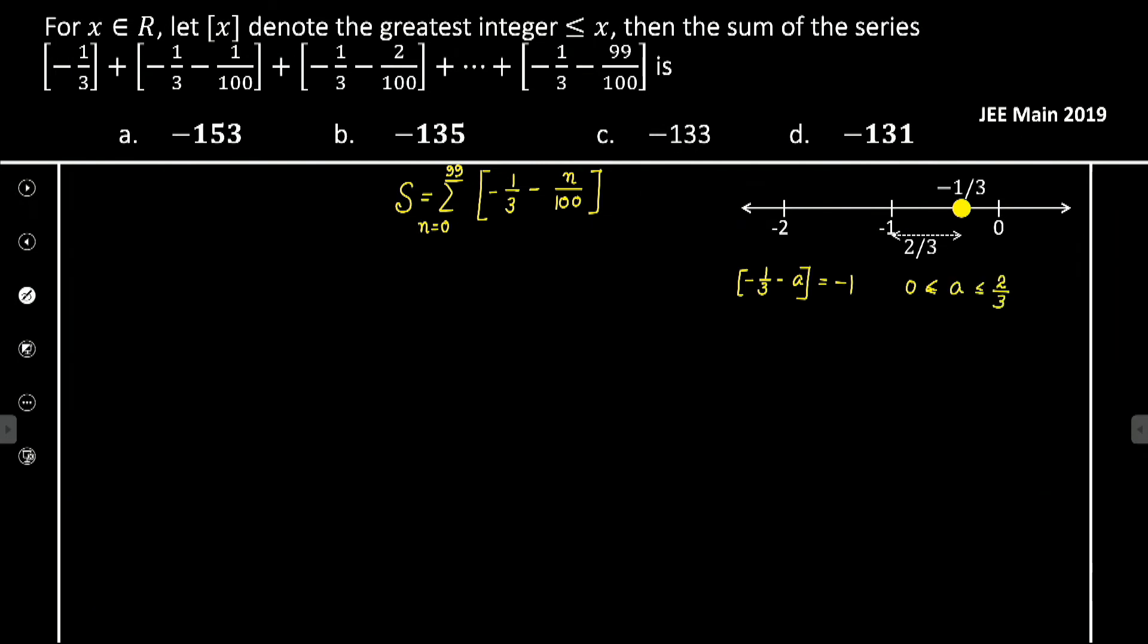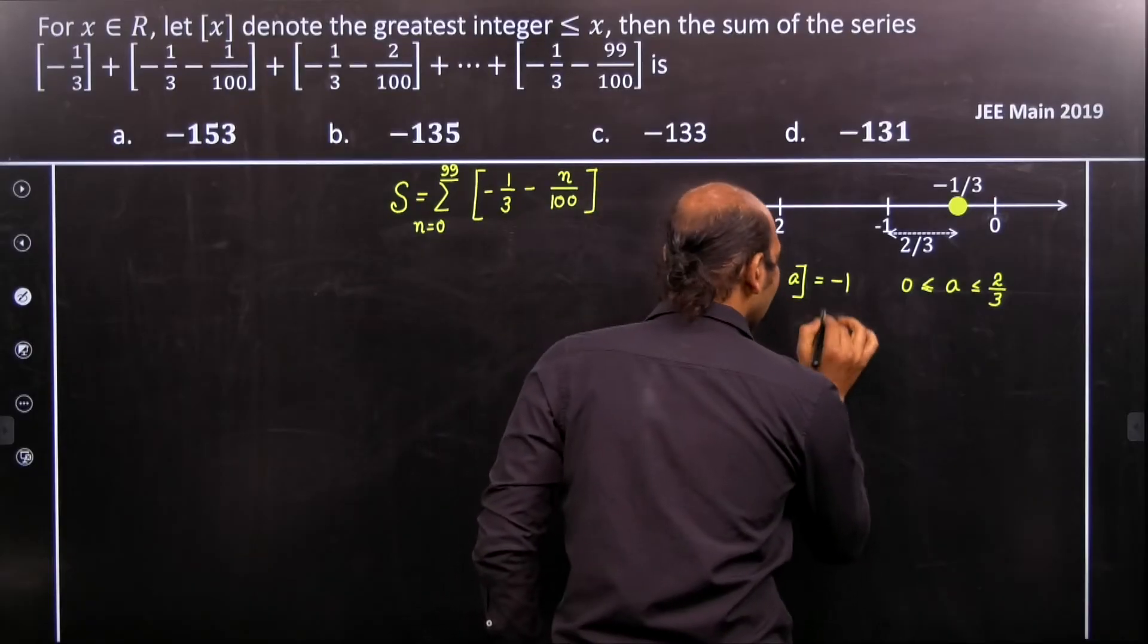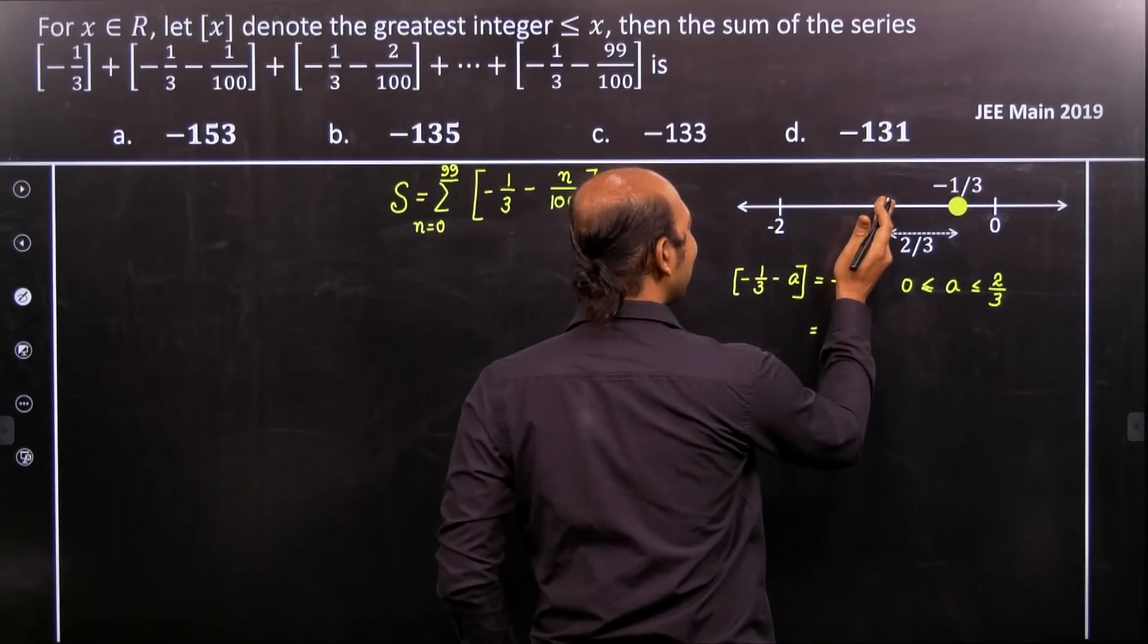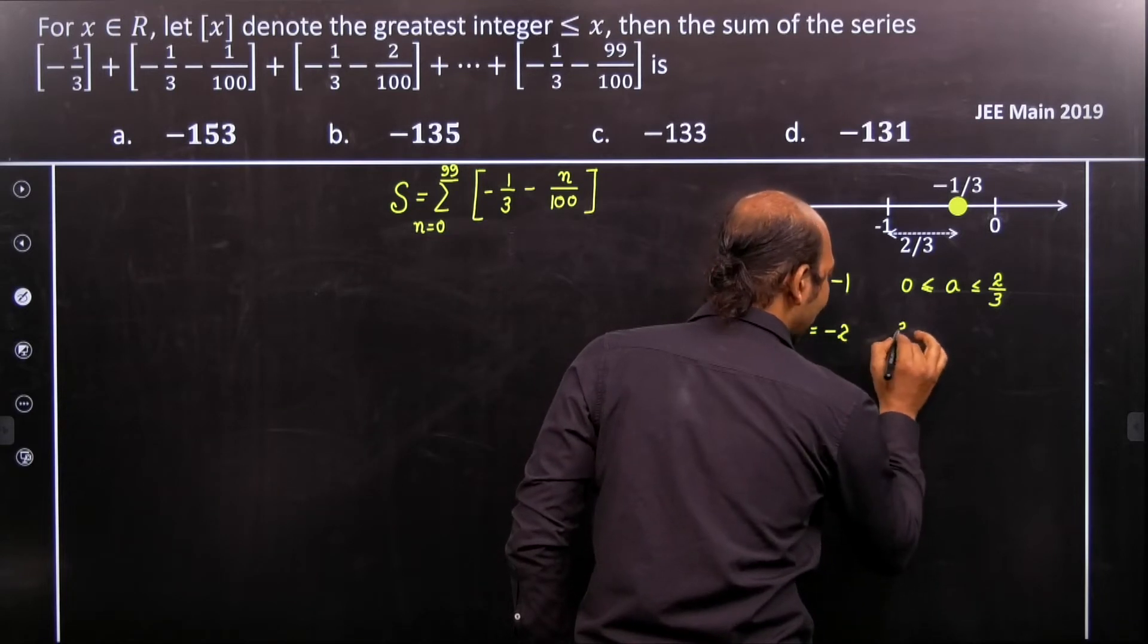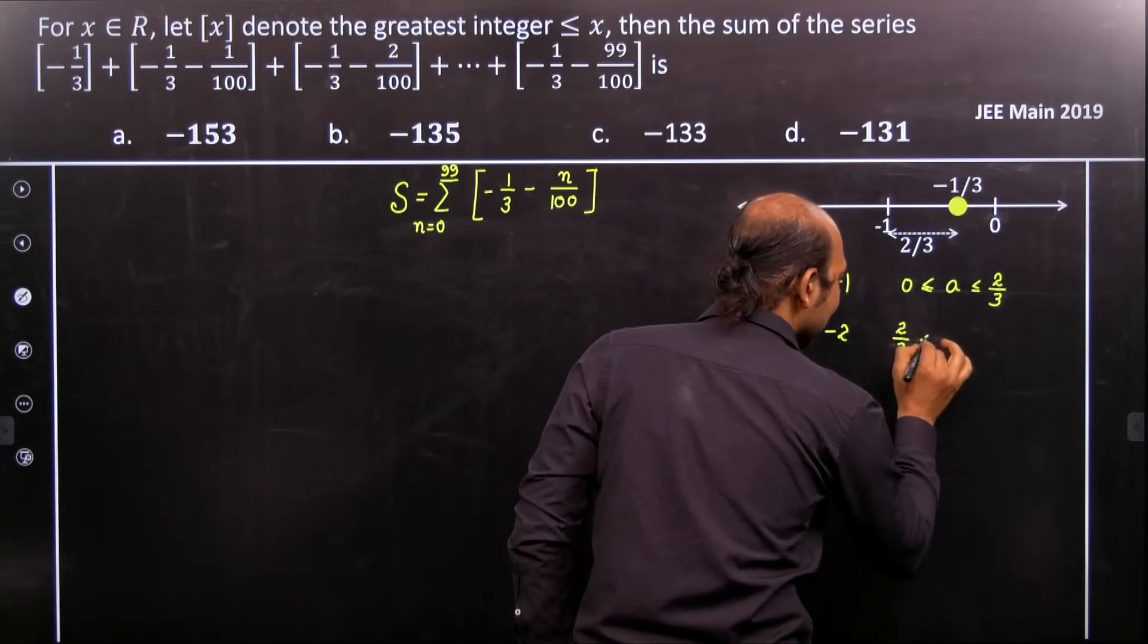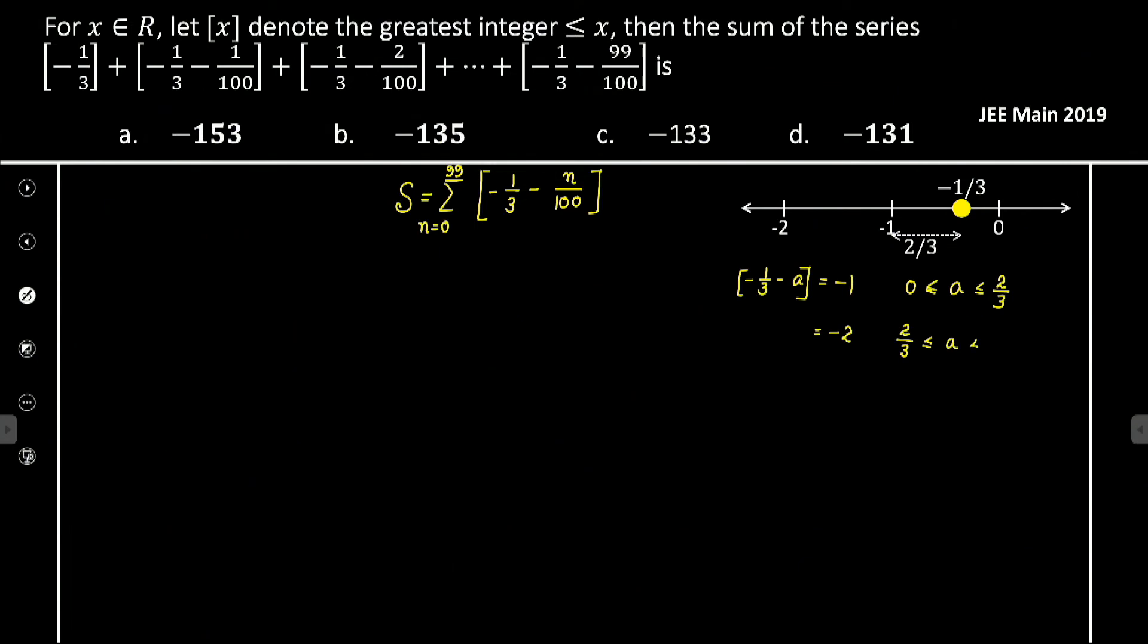If I subtract a little bit extra, more than 2 by 3, then it gives you minus 2. So that gives you 2 by 3 less than or equal to a...